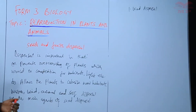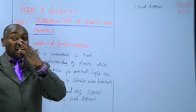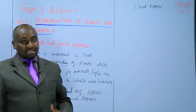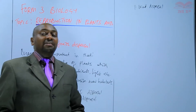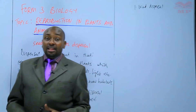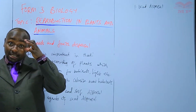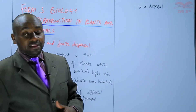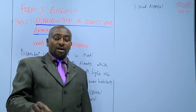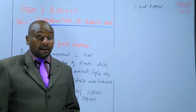Some of the adaptations of fruits dispersed by wind: first, they are light so that they can be carried by air currents. Second, they have either a feather-like or a wing-like structure. That feather-like structure is known as the pappus, and it enables the seed to fall a certain distance away from the parent plant rather than directly below it.